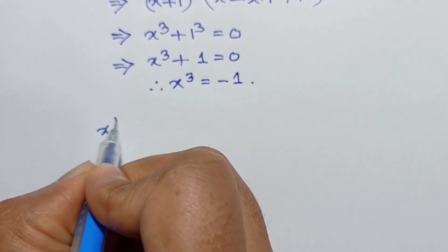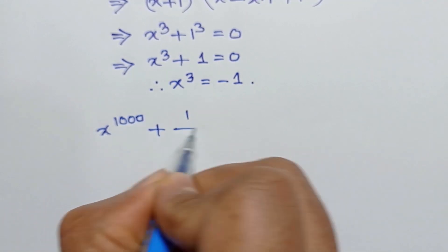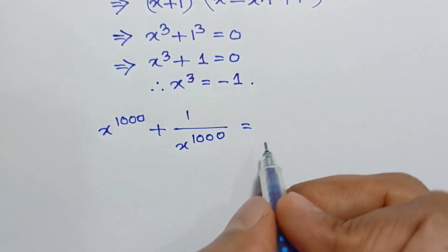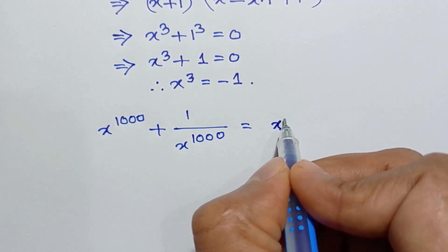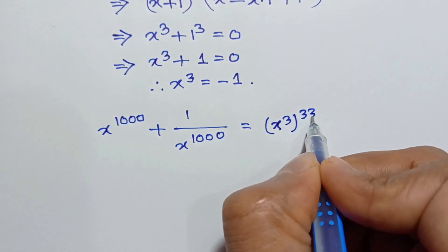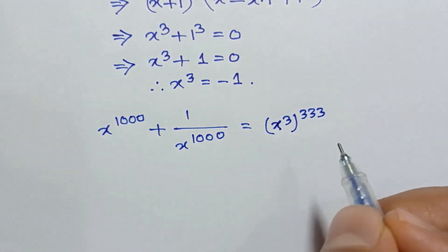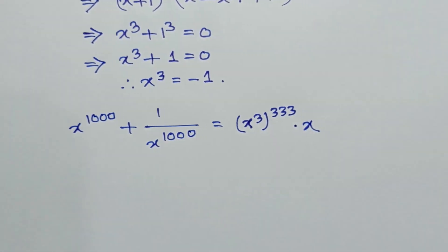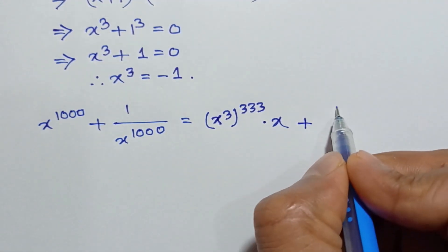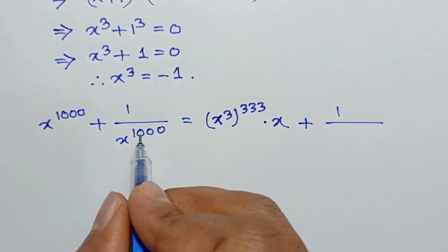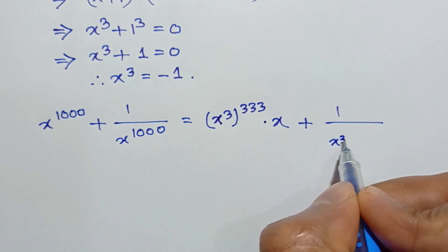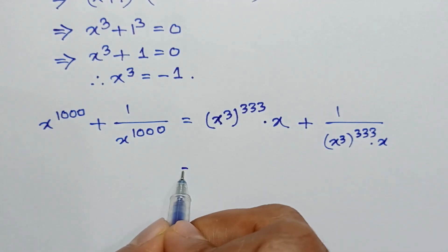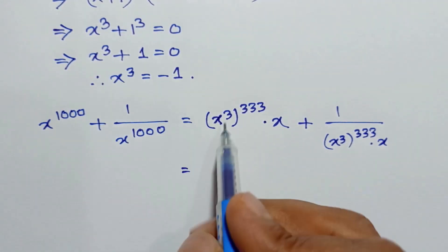Now x to the power 1000 plus 1 over x to the power 1000. Since we know the value of x cubed, we express x to the power 1000 in terms of x cubed. Since 3 times 333 equals 999, x to the power 1000 equals x cubed to the power 333 times x.